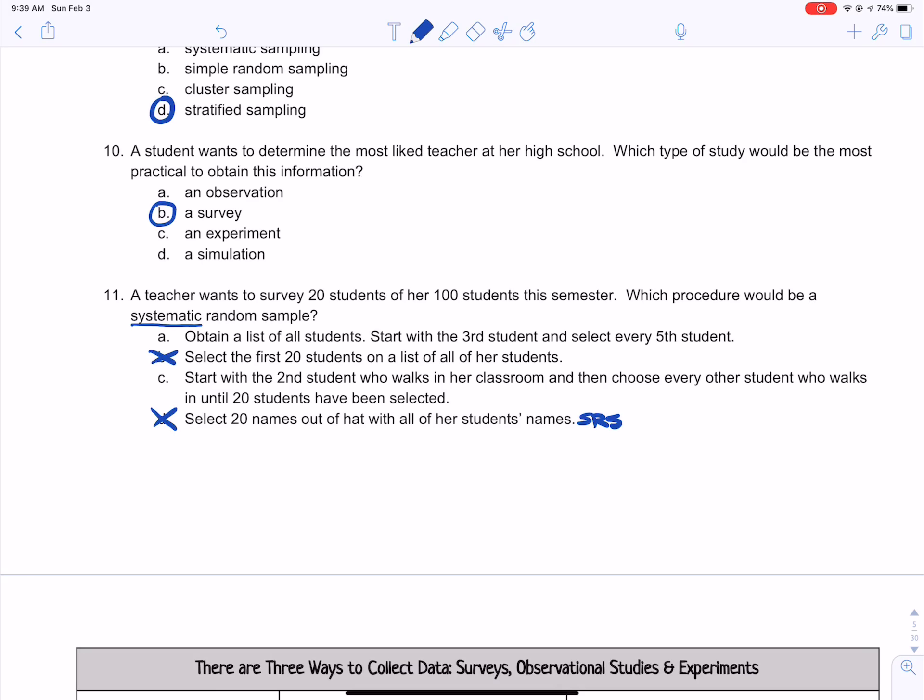But the difference between A and C is that she first obtained a list of all her students. So that is at least a good starting point. And she didn't just start with the second student. So I would choose A based on the fact that they've told you she at least obtained the list of all of her students first. So I would hope that when she starts with the third and selects every fifth that they were randomly chosen. But this would certainly be a better answer if they had said that. All right. So that is it for this video.